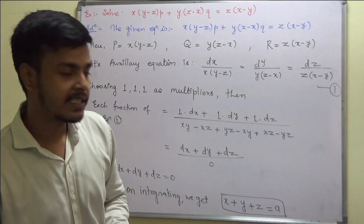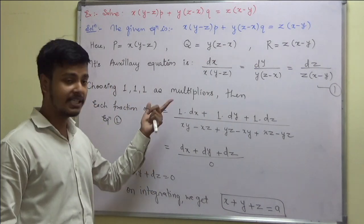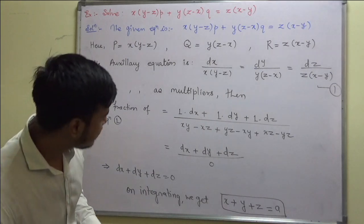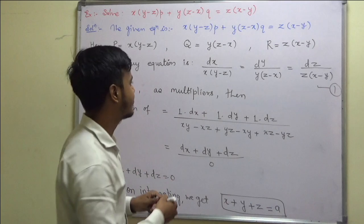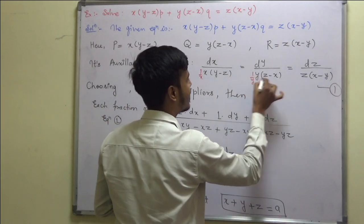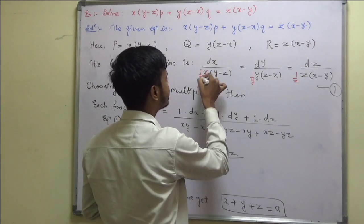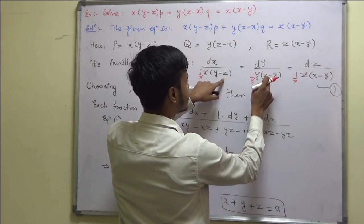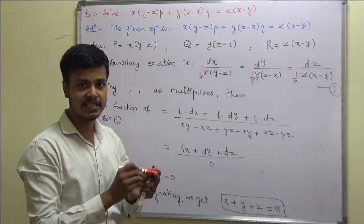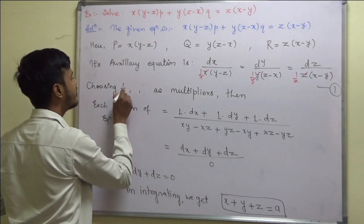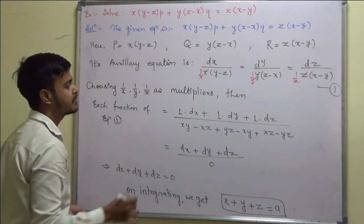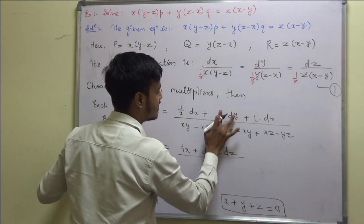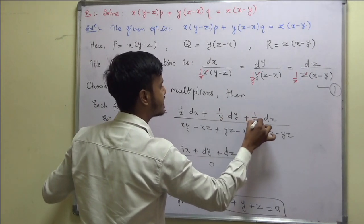I hope you found the multipliers. If I multiply by 1/x, 1/y, 1/z: the x cancels with x, y cancels with y, z cancels with z, and the remaining terms — (y − z) + (z − x) + (x − y) — sum to 0. So with multipliers 1/x, 1/y, 1/z, the denominator is again 0. Each fraction of equation 1 equals (1/x dx + 1/y dy + 1/z dz) upon 0.